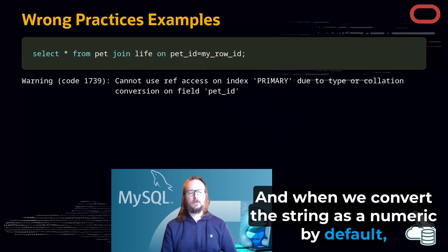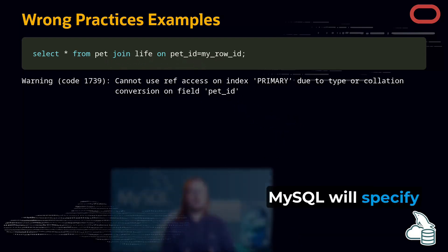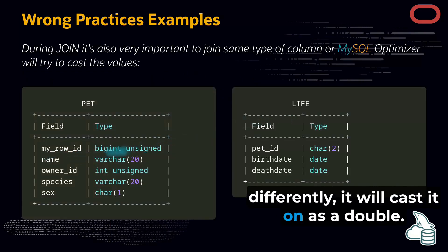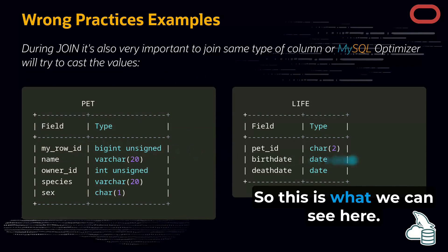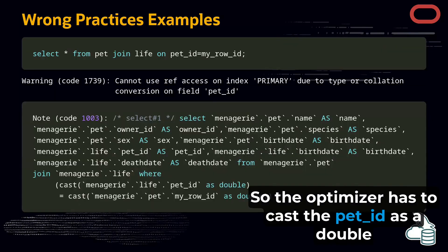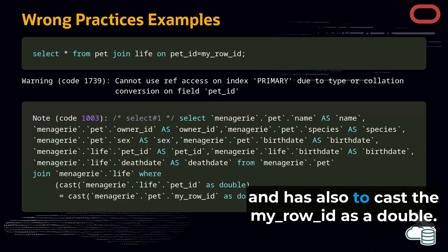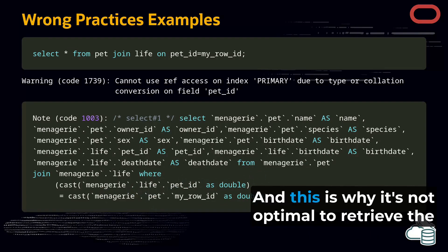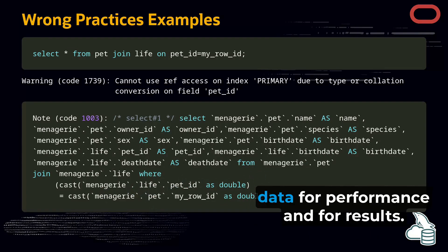When we convert the string as a numeric, by default, MySQL will cast it as a double. So the optimizer has to cast the pet ID as a double and also cast the my row ID as a double. It's casting both. And this is why it's not optimal to retrieve the data.